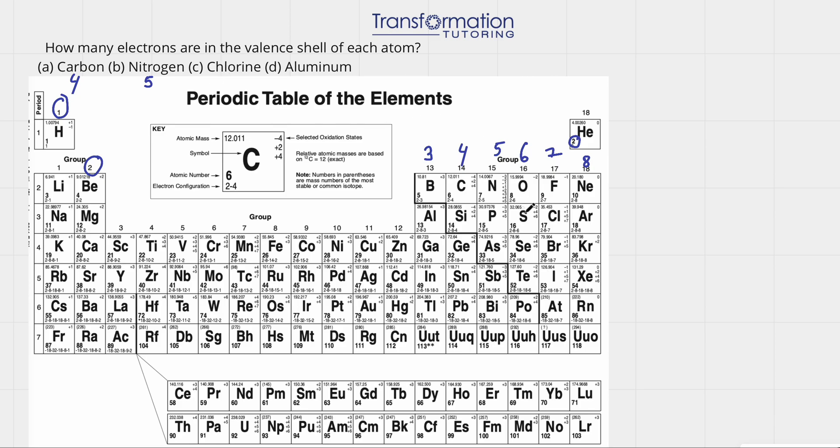Next is chlorine. Chlorine is here. How many valence electrons? Seven. Finally, we have aluminum. Aluminum is right here. How many valence electrons should it have? It should have three valence electrons.